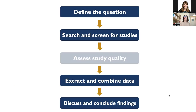This schematic puts that into more of a visual view — defining the question, searching for and screening studies, extracting data, and then discussing and concluding findings. The step 'assess study quality' is grayed out here, but this is a step that would be required if you were doing a systematic review. We're talking about scoping reviews here, not systematic reviews, but I wanted to include this as a way of distinguishing those two very related methodologies.